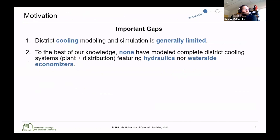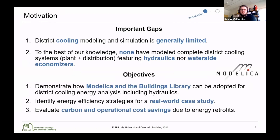In the context of energy and climate targets, these benefits are very important because space cooling is growing faster than any other building end use, making district cooling a very favorable option for many communities across the globe. In order to realize the benefits of district cooling, computational modeling and simulation is a very effective approach. However, there are some important gaps: district cooling modeling and simulation is generally limited, and to the best of our knowledge, none have modeled complete district cooling systems including both detailed plants and the distribution network featuring hydraulics and waterside economizers. To address these gaps, we have three main objectives: first, to demonstrate how Modelica and the Buildings Library can be adopted for district cooling energy analysis including hydraulics; second, to identify energy efficiency strategies for a real-world case study; and third, to go beyond energy and evaluate carbon and operational cost savings due to the energy retrofits.